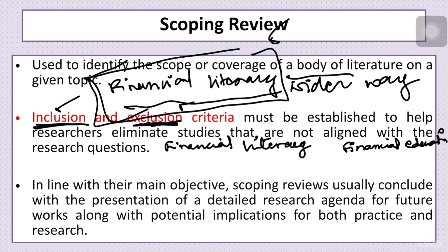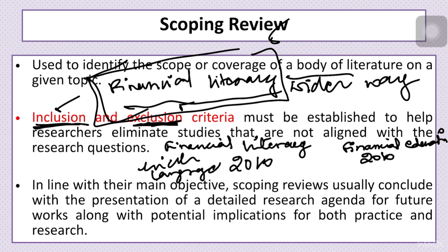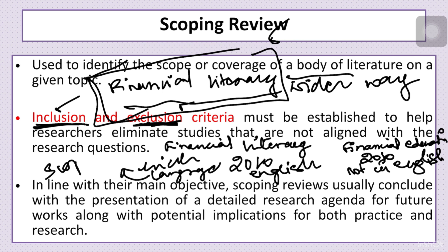Another criterion could be time: including only studies published after 2010 and excluding those before 2010. Language is another criterion — including studies published in English and excluding those not in English. Additionally, indexing quality matters: including papers indexed in Scopus, SSCI, or ABDC, and excluding studies not indexed in reputable publishers.